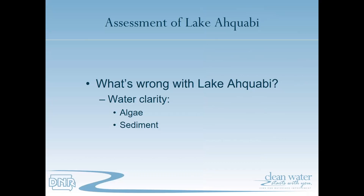An assessment of Lake Akwabi comes down to what the problems are. We have a couple of issues: clarity issues, which can be generated by algae or sediment — suspended solids in the lake that make it less transparent — and the second issue is algae as a result of nutrients, specifically nitrogen and phosphorus. The algae itself can also create clarity issues. So what's going on with Lake Akwabi is that we have a lot of algae and sedimentation in the lake.